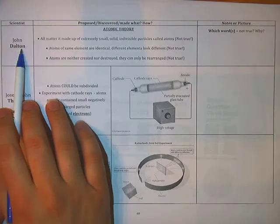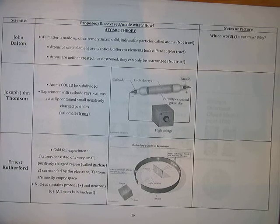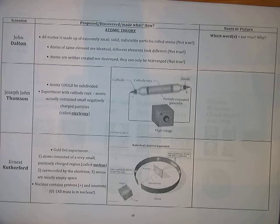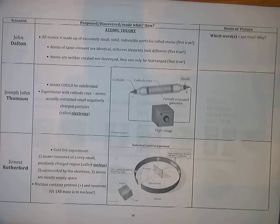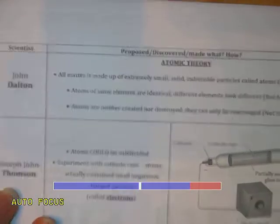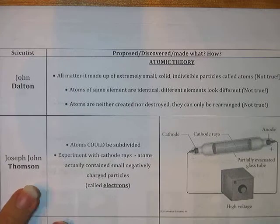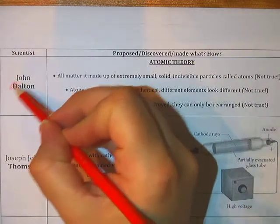Let's start first with John Dalton. I want to color code this chart on page 60 and the back of it, page 61, to help you remember a little more about each one of these guys. I'm going to use red for John Dalton. You need to get four colors as well — highlighters, colored pencils, whatever. I have a reason for each color I'm using, so I advise you to use the same colors as me.